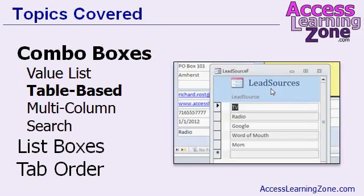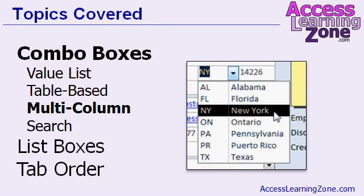Then we'll learn about table-based combo boxes, where we actually create a separate table to store our values. Table-based combo boxes let us use the same set of data in multiple forms. We'll also learn how to create a multi-column combo box, where you can see two or more columns of data when you open the box up.